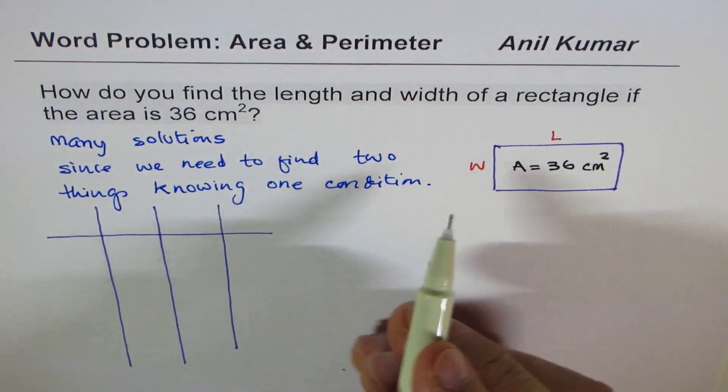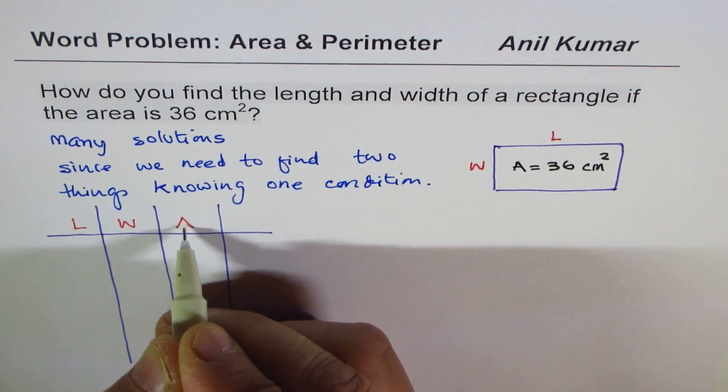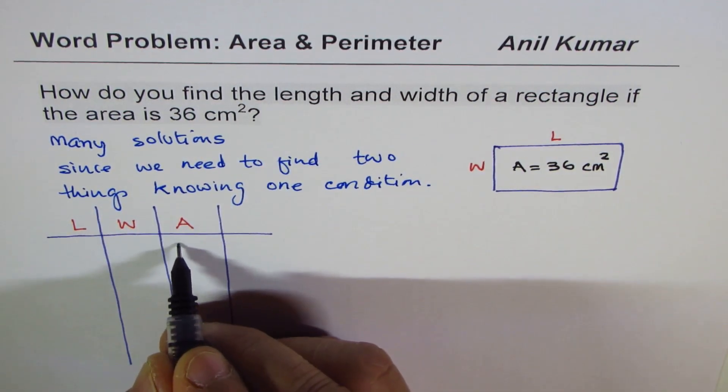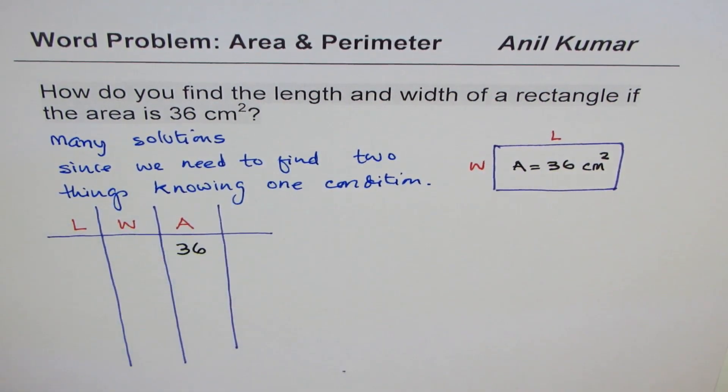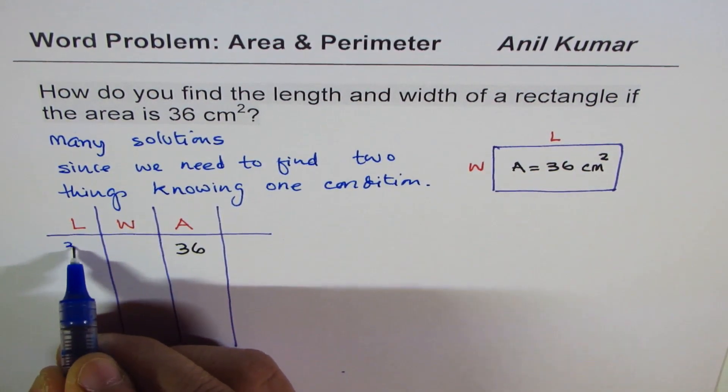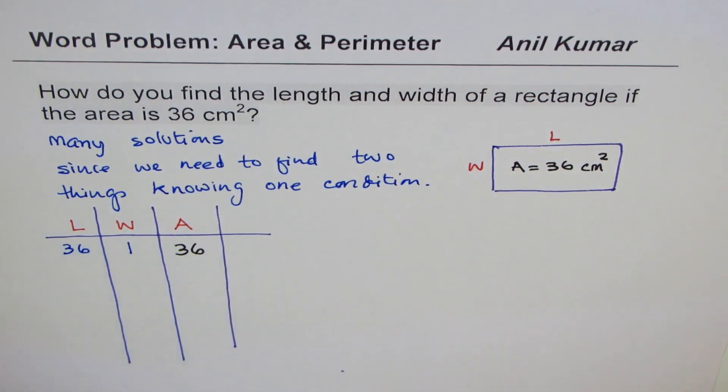So we are saying that length times width is equal to area. What are we given? We are given what area is. We know area is 36. Now, if area is 36, in that case, I could have length as 36 with width of 1. So when I multiply them, I get 36.